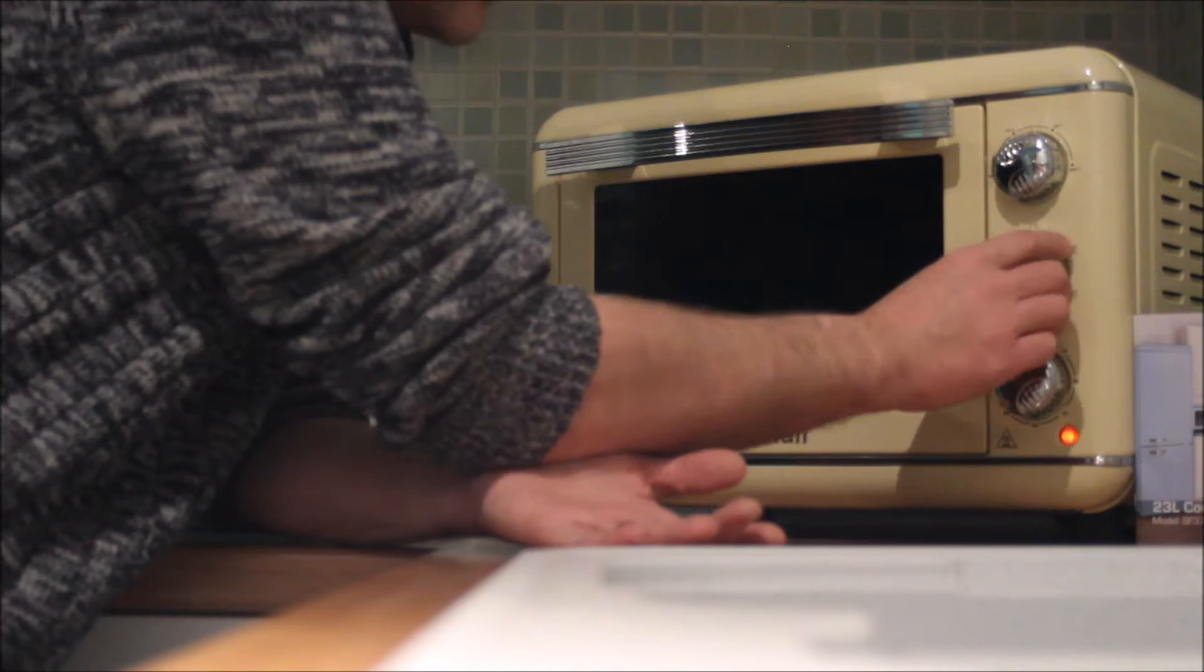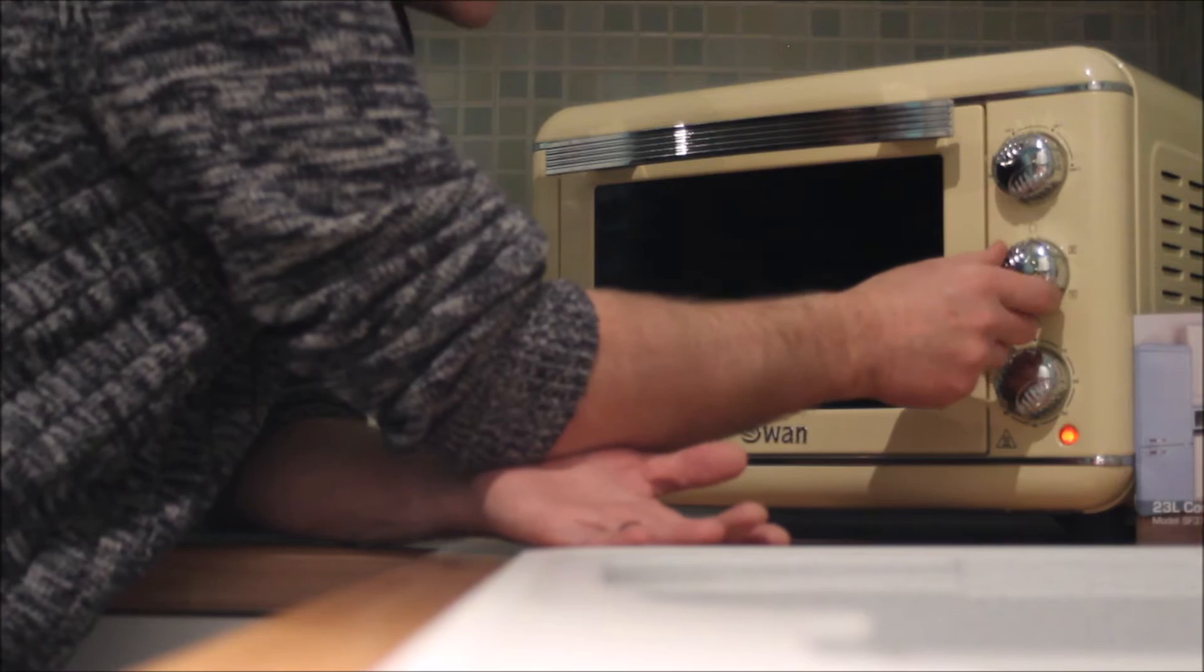We have six settings on the oven itself. We have off which is the top square. It's totally off. Then we have convection which is top and bottom heating.